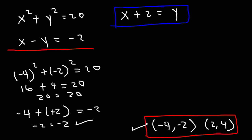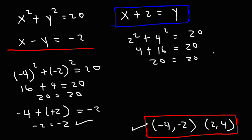Now let's check the second solution where x is 2 and y is 4. 2 squared is 4 and 4 squared is 16, so 4 plus 16 is 20. For the second equation, 2 minus 4 is negative 2. So both solutions are correct for this example.